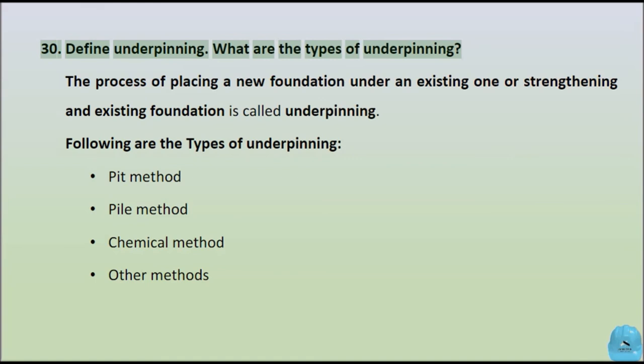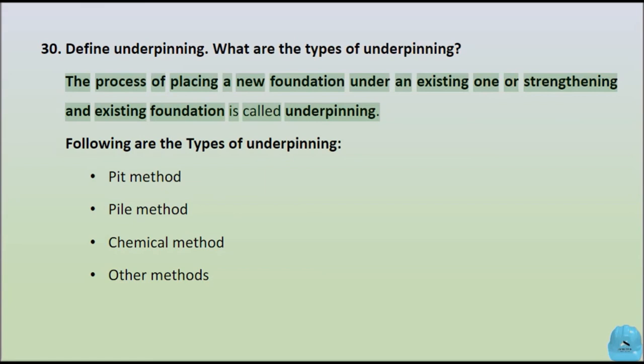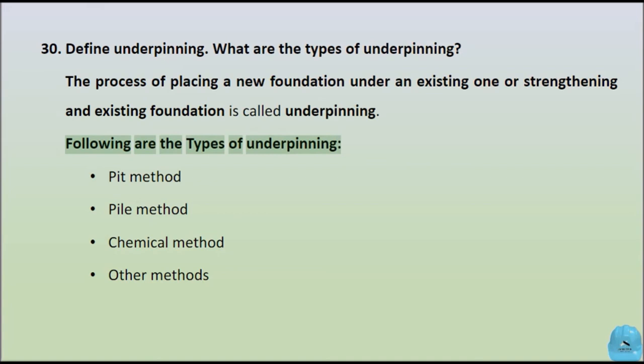Question 27: Define underpinning. What are the types of underpinning? The process of placing a new foundation under an existing one or strengthening an existing foundation is called underpinning. Following are the types of underpinning: pit method, pile method, chemical method, and other methods.